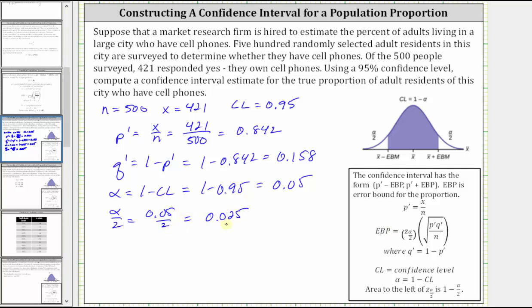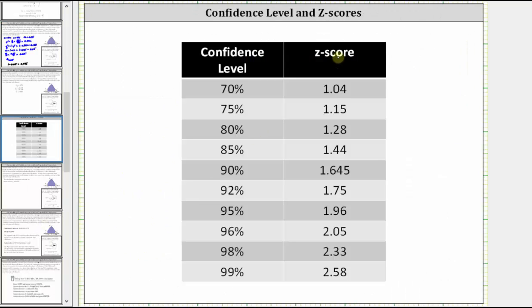We often indicate the z-score as z sub 0.025, where 0.025 is the area to the right of the z-score, which means the area to the left of the z-score is one minus 0.025, which is equal to 0.975. If we are finding the z-score using technology, we need this area. If we're allowed to use a table, we can simply look up the z-score for the 95% confidence level, which is 1.96.